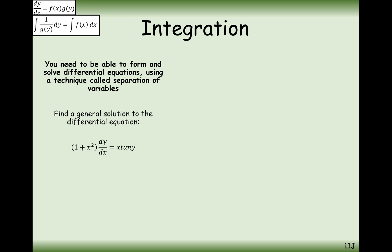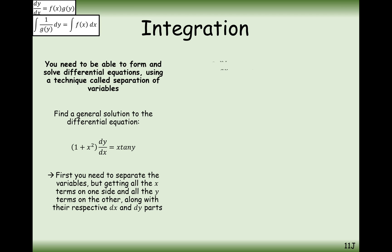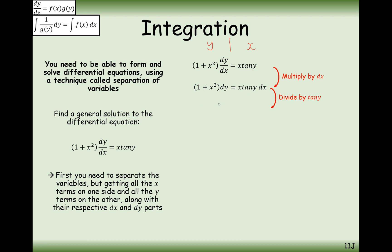The first question we're going to solve looks like this: we've got (1 + x²) dy/dx equals x times tan of y. Remember we need to move all of the x terms onto the right hand side and all of the y terms onto the left hand side. The first thing I can see that's on the wrong side is this (1 + x²). We multiply by dx, then divide by tan y, and then divide by (1 + x²). Now all the y's are on the left hand side, all the x's are on the other side, and now we integrate both sides.